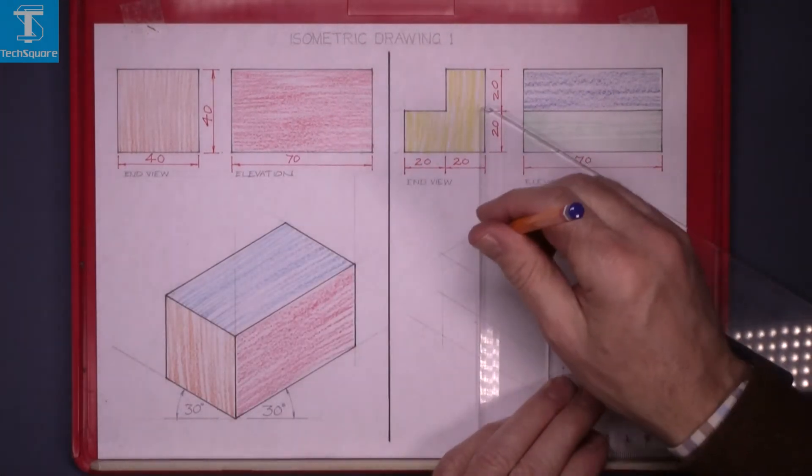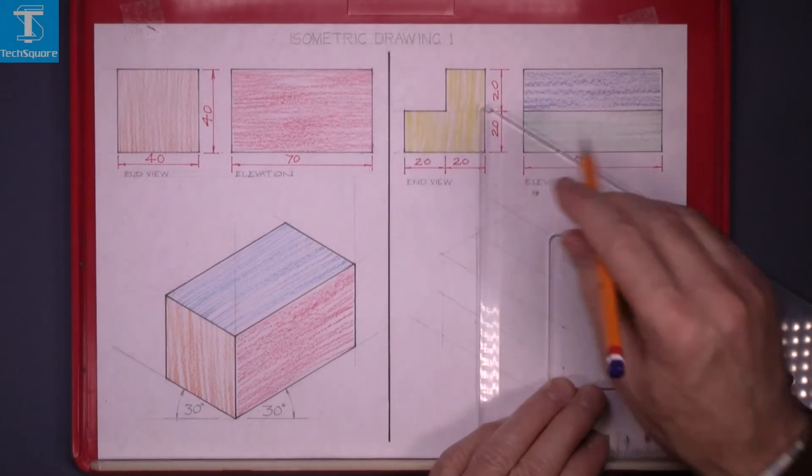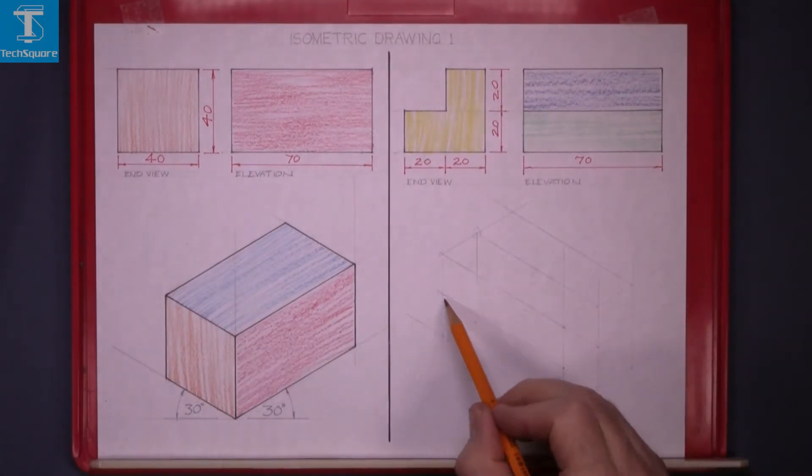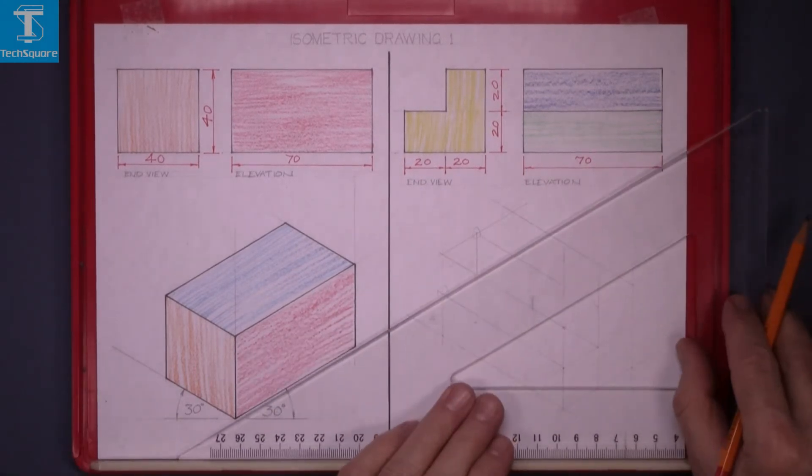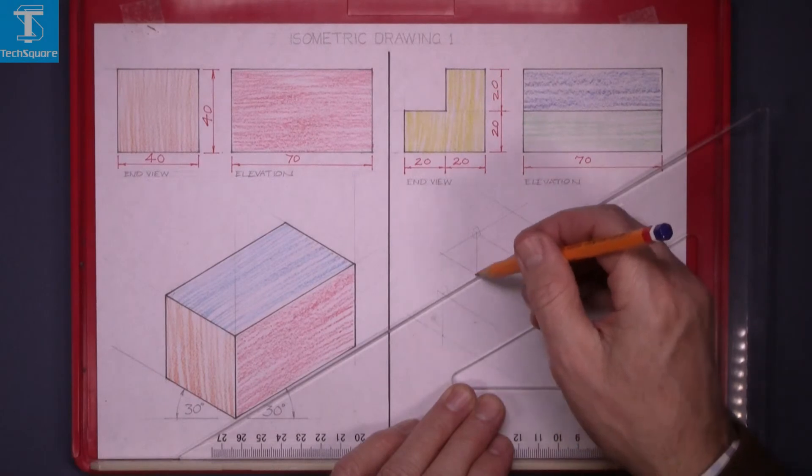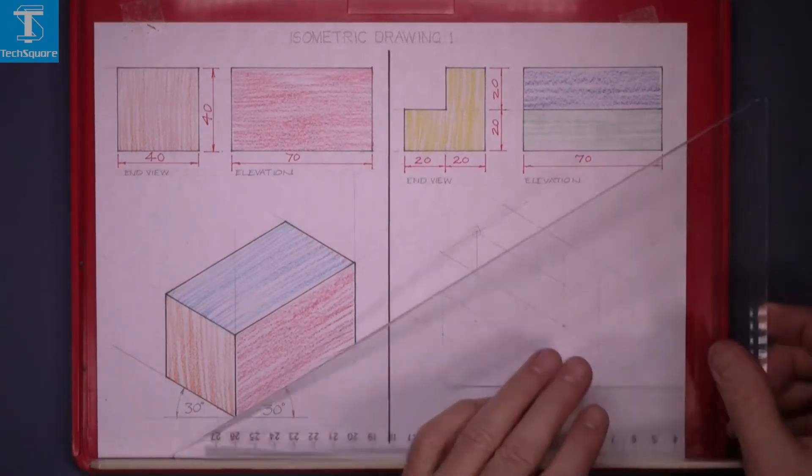And follow the line. That point there drawn straight down. And at this point back at 30 degrees to get the inside point there.